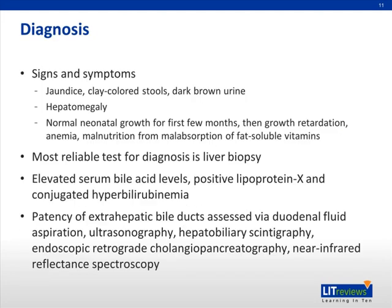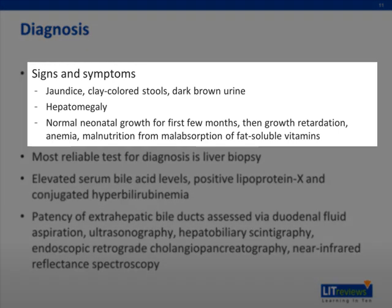I will now discuss the diagnosis of the disease. Signs and symptoms of biliary atresia include jaundice, clay-colored stools, dark brown urine, and hepatomegaly. Children with the disorder have normal growth for the first few months, then growth retardation, anemia, and malnutrition from malabsorption of fat-soluble vitamins.